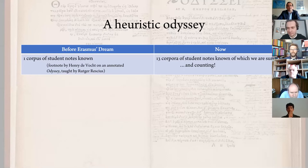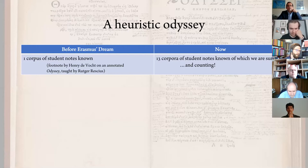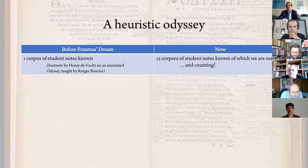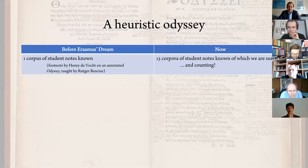Because before Erasmus Dream, there was only one corpus of student notes known, which was mentioned in a footnote by de Vogt. But now we have at least 13 bodies of student notes from the Trilingue of which we are sure. There are probably many more, which is why the count of 13 is still ongoing.